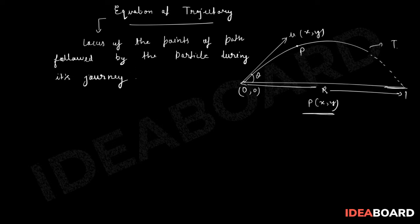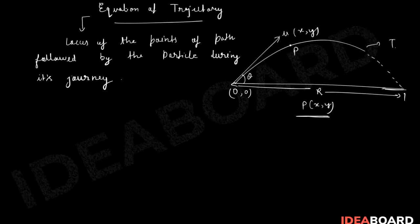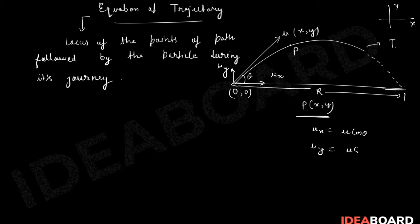This horizontal distance is the range, and the total time is called the time of flight. The particle has two components of velocity: ux in the x-direction and uy in the y-direction, where ux = u cos θ and uy = u sin θ. The acceleration in the y-direction is ay = −g, taking the upward direction as positive.